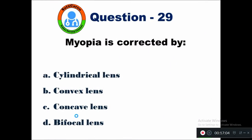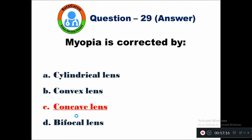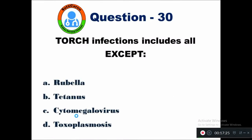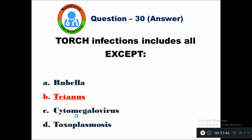Question 29: Myopia is corrected by — option A cylindrical lens, B convex lens, C concave lens, D bifocal lens. Myopia is corrected by using a concave lens. Question 30: TORCH infection includes all except — option A rubella, B tetanus, C cytomegalovirus, D toxoplasmosis. The T in TORCH stands for toxoplasmosis, not tetanus. The right answer is B — tetanus is the exception in TORCH infection.